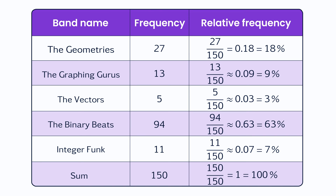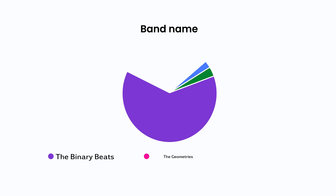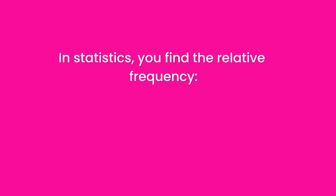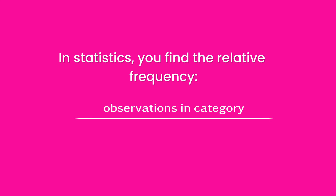The relative frequencies you added to the table help you understand the distribution better. Here, you notice that the clear majority, 63%, preferred the name The Binary Beats, while only 3% liked The Vectors best. At a later stage, you will use relative frequencies to make a pie chart — that's another reason why you need to know this concept well. In statistics, you find the relative frequency by taking the observations in a category divided by the total number of observations.